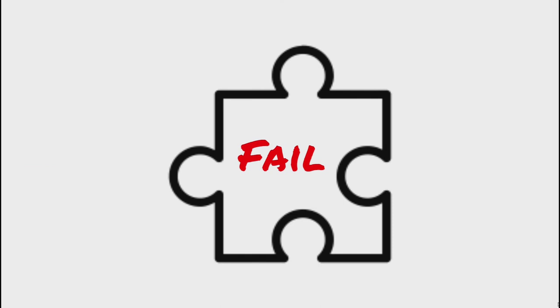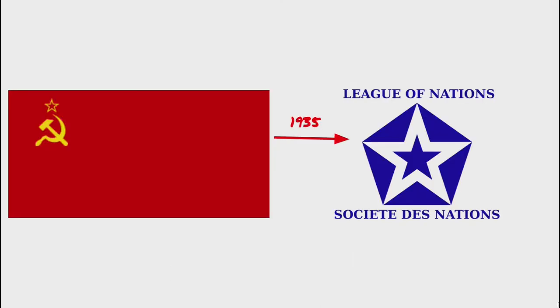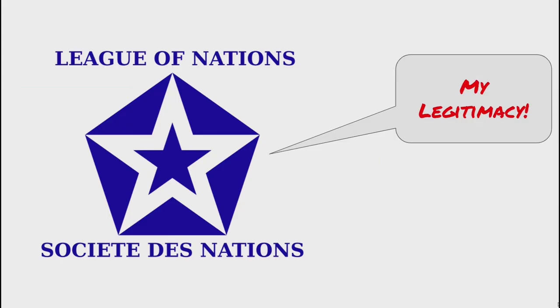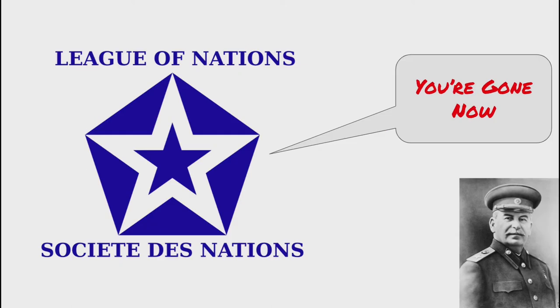Here's another piece to the puzzle that explains why the League of Nations failed. The Soviet Union joined the League in 1935, and the fact that they waited 15 years to join stripped further legitimacy from the organization. This would be compounded by the fact that just four years later, during the Second World War, the Soviet Union was expelled from the League of Nations for invading Finland in the Winter War.